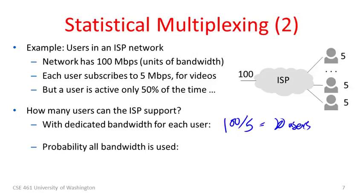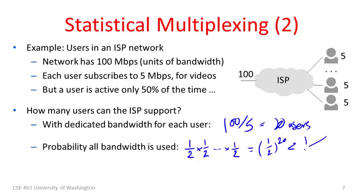With 20 users in a dedicated arrangement, it's extremely unlikely that all 100 megabits per second will be used simultaneously. The probability that all users are using their bandwidth at once is one-half to the 20th power — less than one in a million. That's tiny. It's very unlikely we'll use the entire network capacity, so what can we do about this? One option is to add more users to the network.